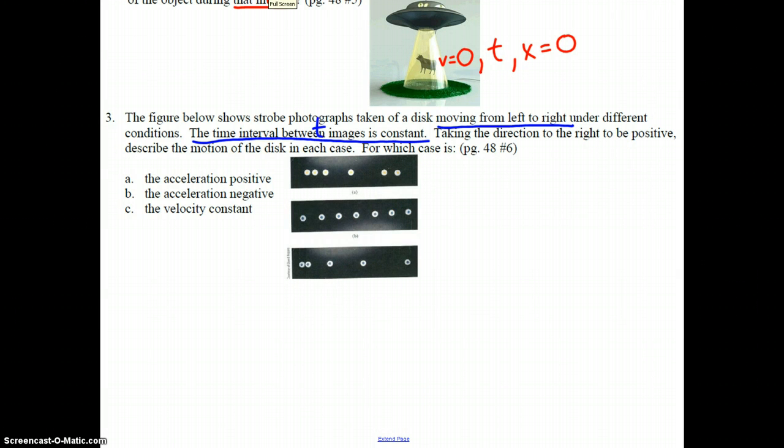What that means is the time in between successive pictures taken by the strobe photograph is constant. The times are all the same between the successive pictures. Taking the direction to the right to be positive, describe the motion of the disk in each case.